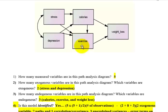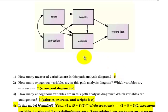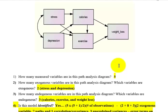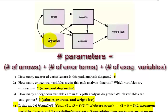You subtract the number of parameters. The parameters are each one of these arrows: seven one-headed arrows and one double-headed arrow, so that's eight. You also add the unexplained variance — those are your error bubbles. Exogenous don't get those, but the endogenous do, so there are three error terms. Eight plus three is 11, plus two exogenous variables, for a grand total of 13 parameters.